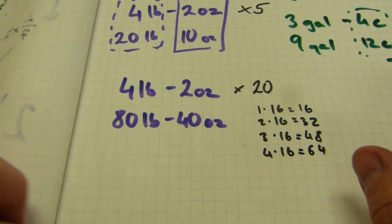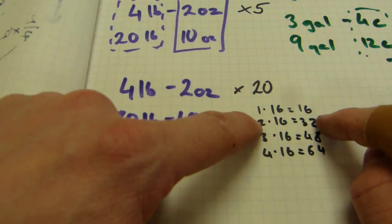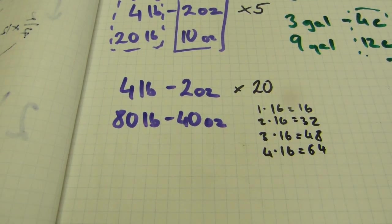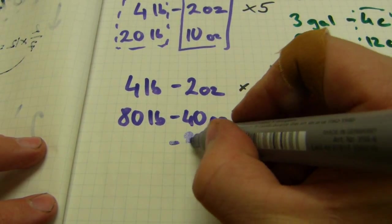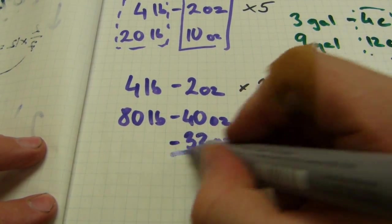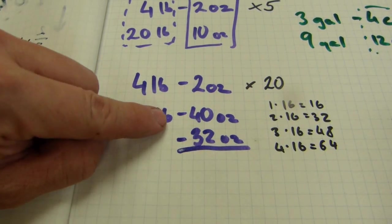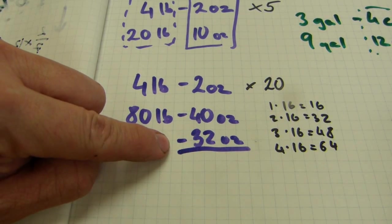So out of these forty ounces, we can carry over thirty-two of them. And I do like writing the subtraction down here. Forty ounces minus thirty-two ounces. Now that one is a dash, but that one is a subtraction.